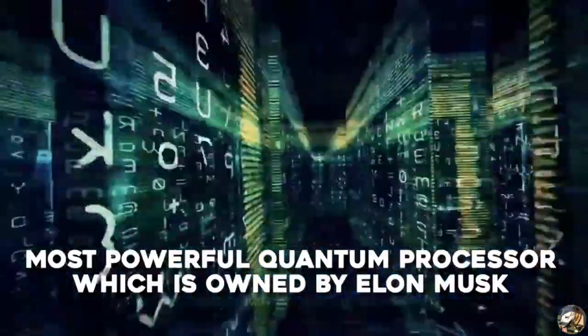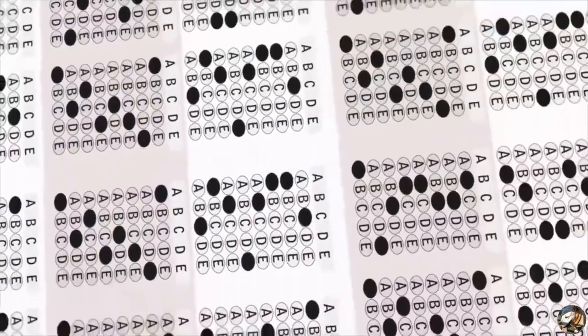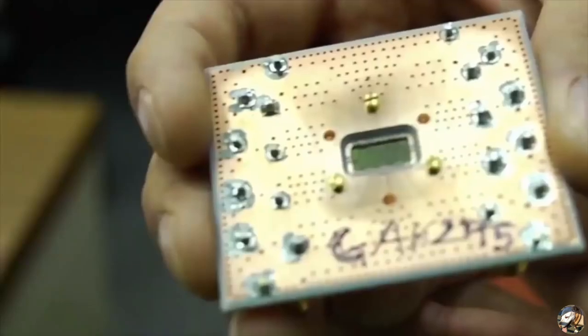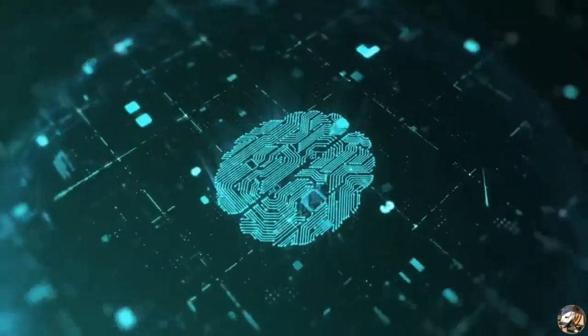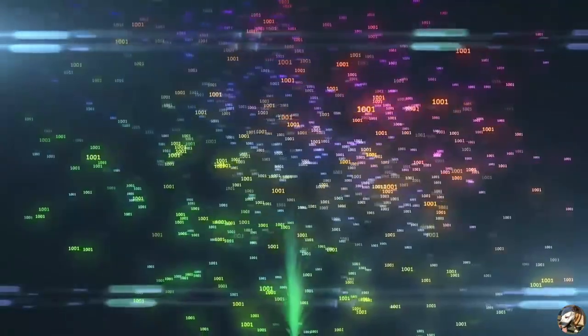In today's video, we are going to tell you about the most powerful quantum processor, which is owned by Elon Musk. Let's know what we can do with such a powerful chip. It's true that IBM is behind the production of this processor, but Elon Musk has just put forward a deal. But before that, have a look at what this processor is capable of.